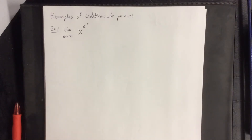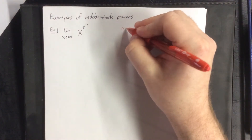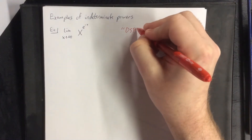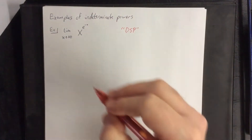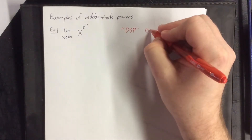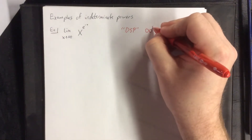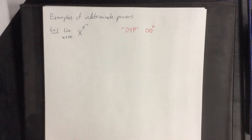A couple examples of how to deal with these indeterminate powers. First off, we have the limit as x approaches infinity of e raised to the power of e to the negative x. As x goes to infinity, the base of this exponential will go to infinity and e to the negative x tends towards 0. Therefore we have an indeterminate form of the form infinity raised to the 0 power.